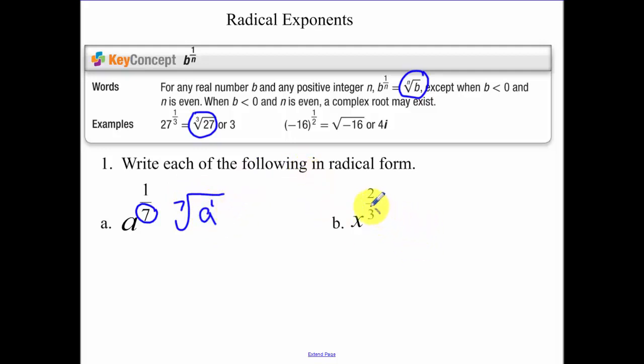For part b, the number on the bottom of the fraction is your index or your root. The number on top is the power of your exponent.